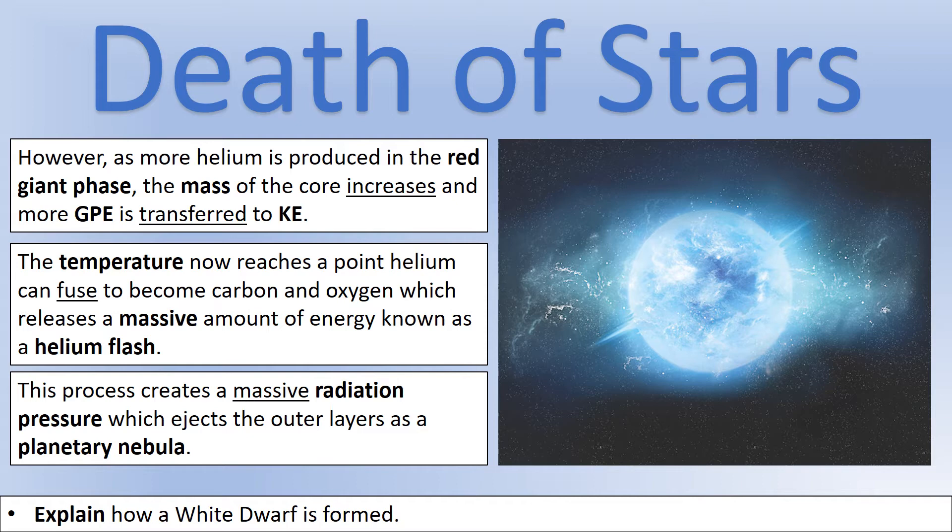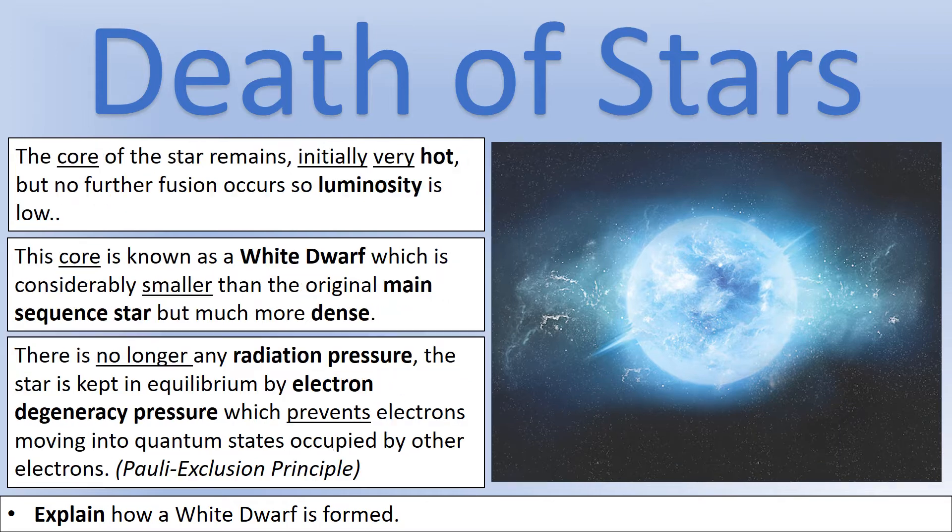So this massive amount of energy causes a massive radiation pressure, which means the outer layers of the star get ejected from the star. And that's called a planetary nebula when that happens. So that's the process by which all the outer parts of the star are ejected, leaving just a core behind. So the core is initially very hot, but the luminosity drops very low because it has a very small surface area. So this is known as a white dwarf.